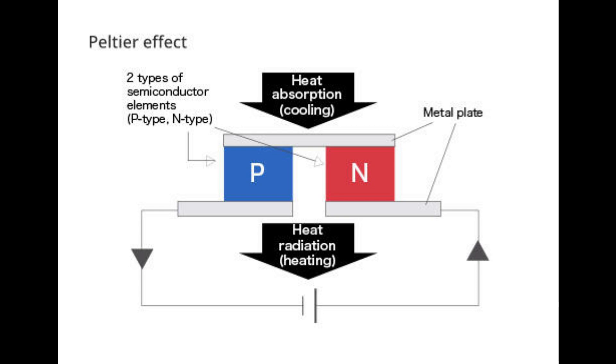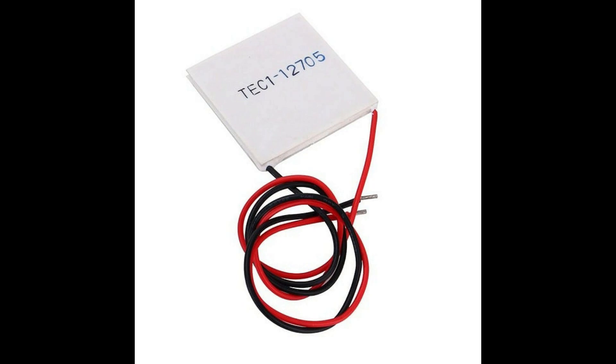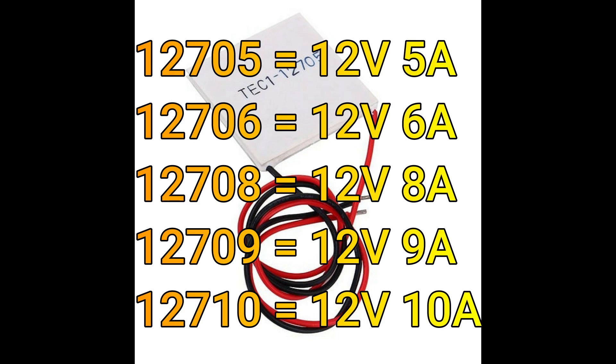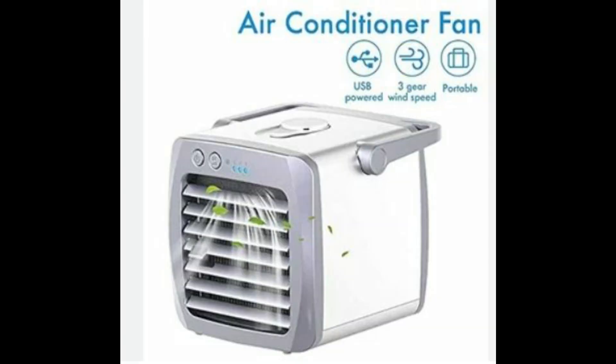My dear friends, you can see this is the Peltier chip which is available in the market. The number on the Peltier indicates the amount of voltage and current required for that particular chip. For example, if it's 12705, it is 12 volt 5 ampere. 12706 is 12 volt 6 ampere. So the first two digits are voltage, last two digits are ampere, and 7 is the size of the Peltier. It has got many applications like air conditioning, mini refrigerator, hot and cold water cooler, etc.